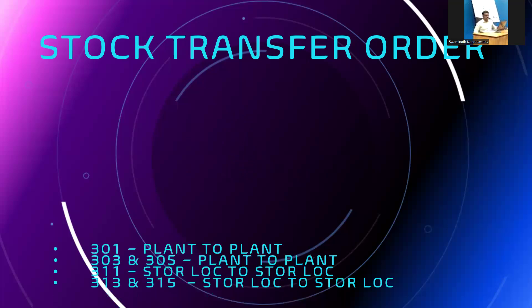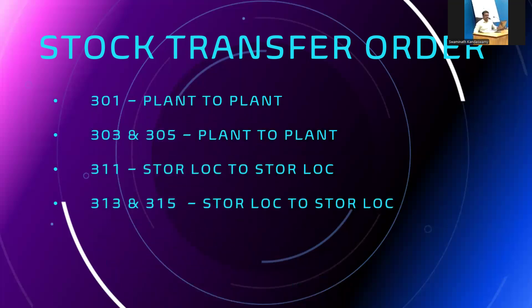Next, stock transfer order (STO). Between two plants, single-step is movement type 301. Between two plants using the two-step procedure, it is 303 and 305. Between storage locations, single-step is 311. Between storage location to storage location using the two-step procedure, it is 313 and 315.